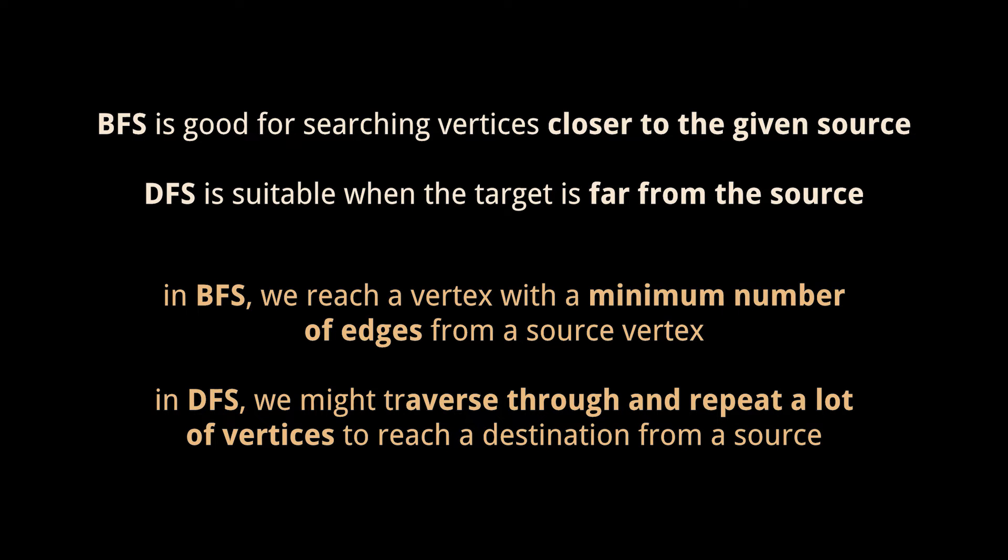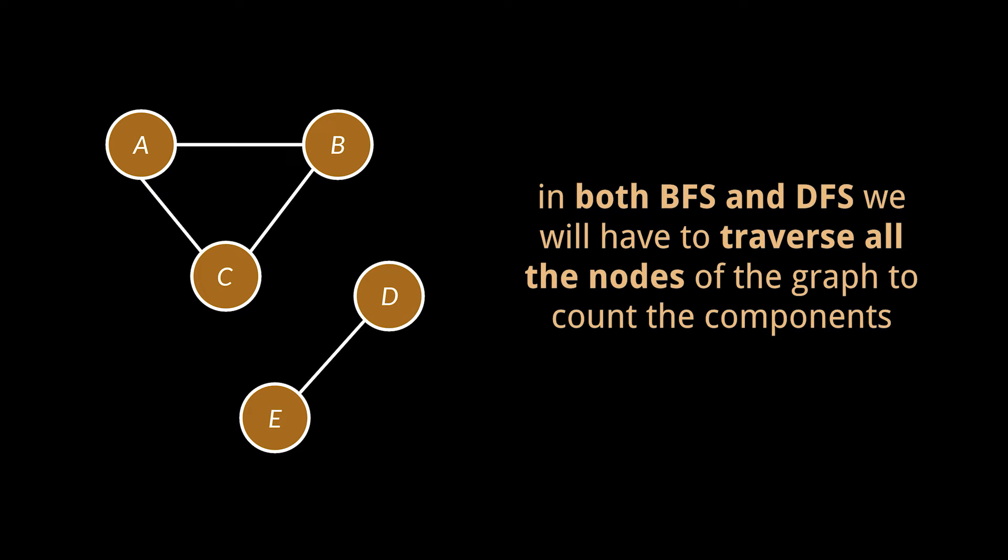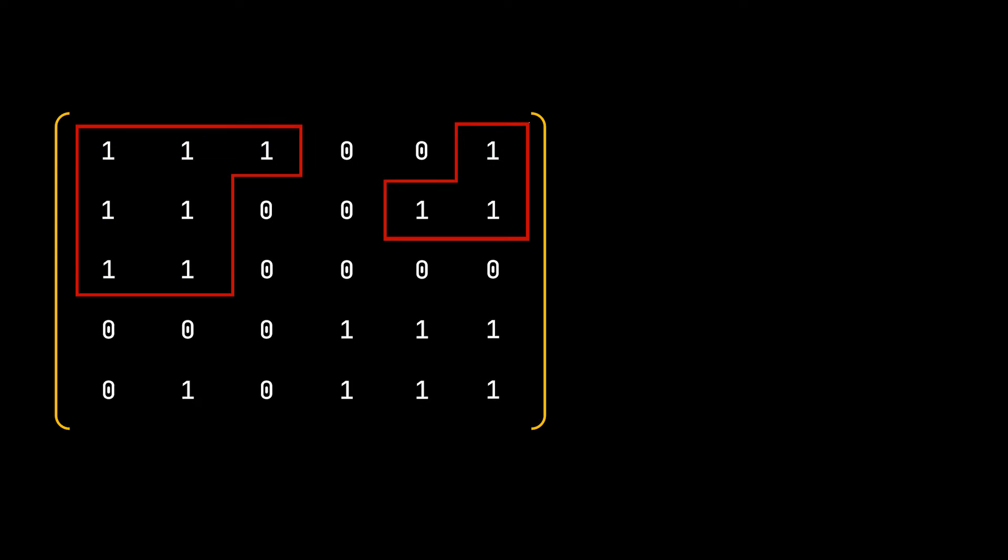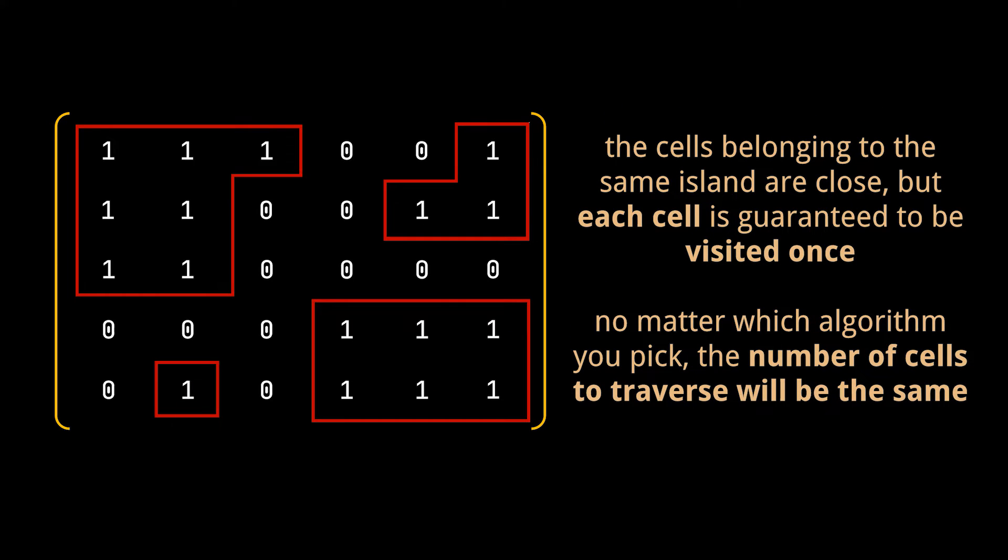To expand on this further, take the examples we covered in our previous video. You see, in this first one, it doesn't matter which technique you pick because we will ultimately need to traverse all the nodes of the graph to mark them as visited and make sure that the components count is correct. Same applies to the previous matrix we saw. The cells belonging to the same island are close to one another, so BFS might be slightly better, but each cell is guaranteed to be visited once, so no matter which algorithm we pick, the number of cells to traverse will be the same.